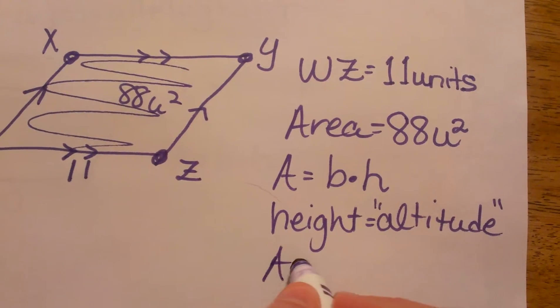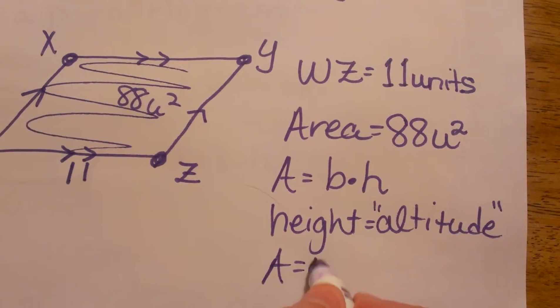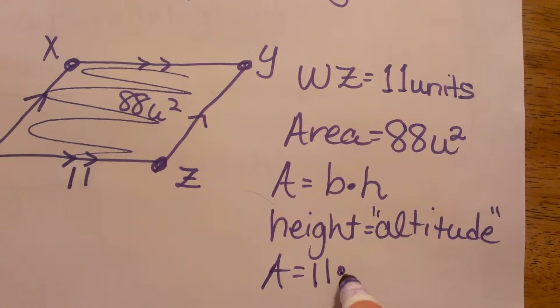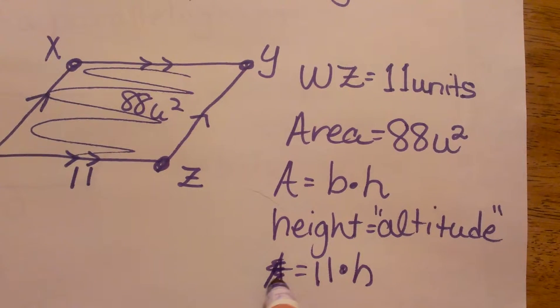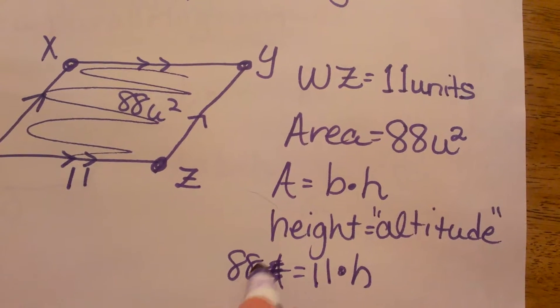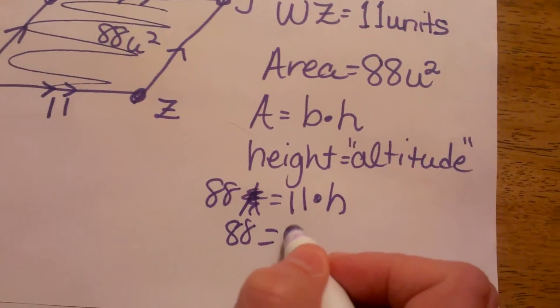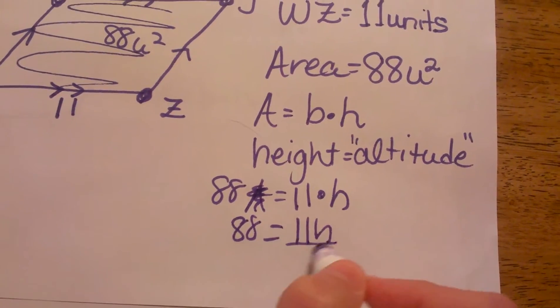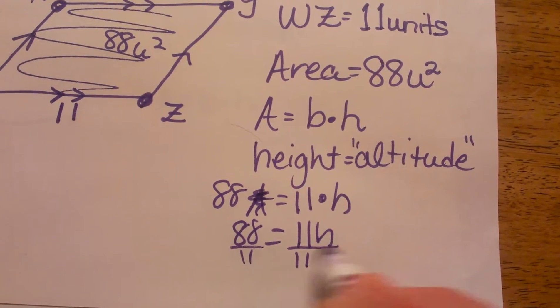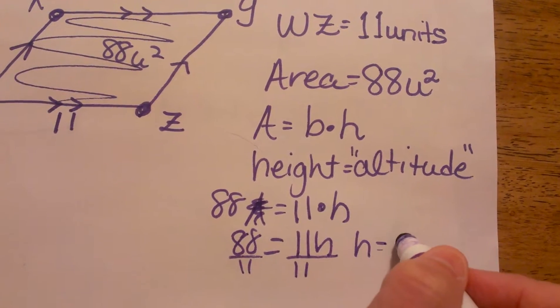I'm going to plug in my base as 11 and my area as 88. So I have 88 equals 11h. Divide both sides by 11 and my height is 8.